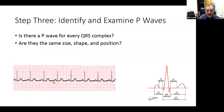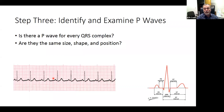Are the P waves the same size? They all look the same size — you can count how many squares they are to be sure. Are they the same shape, or do they have a different morphology? If a few of them look different, that means they were excited from a different area than the others, so the shape is important. Also look at position: is the PR interval the same, or is it different? If it is different, that will clue you into certain pathologies.